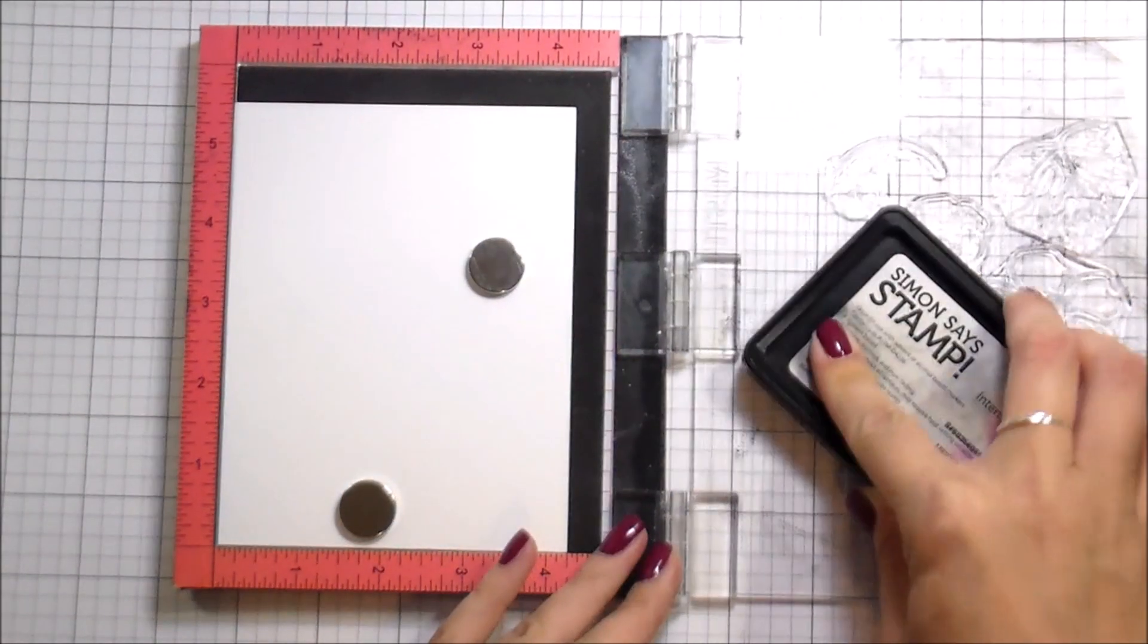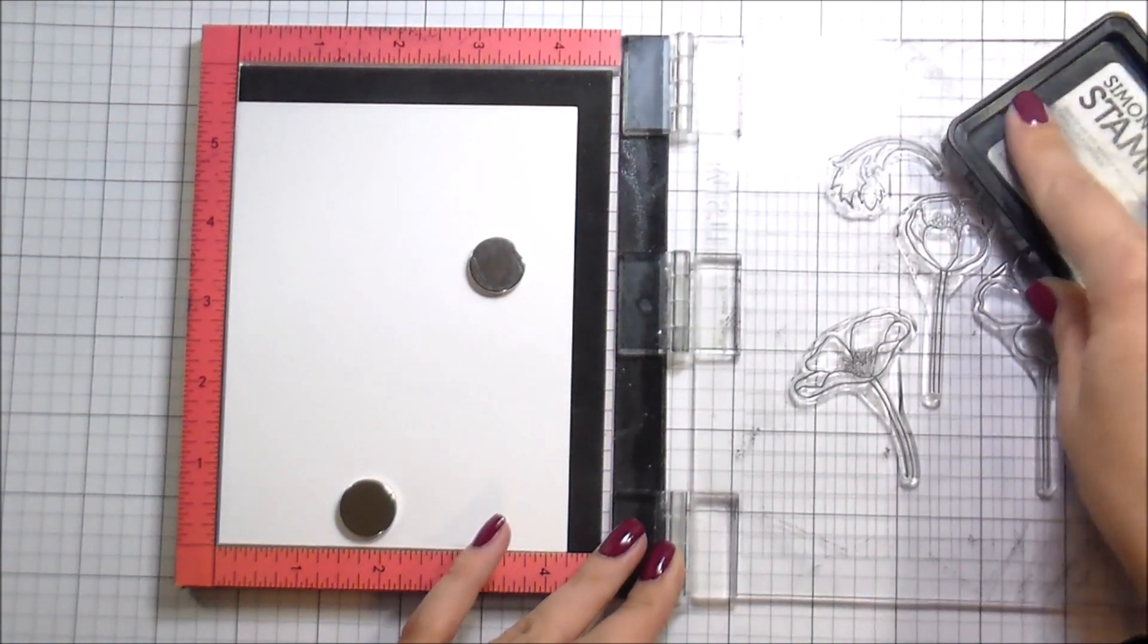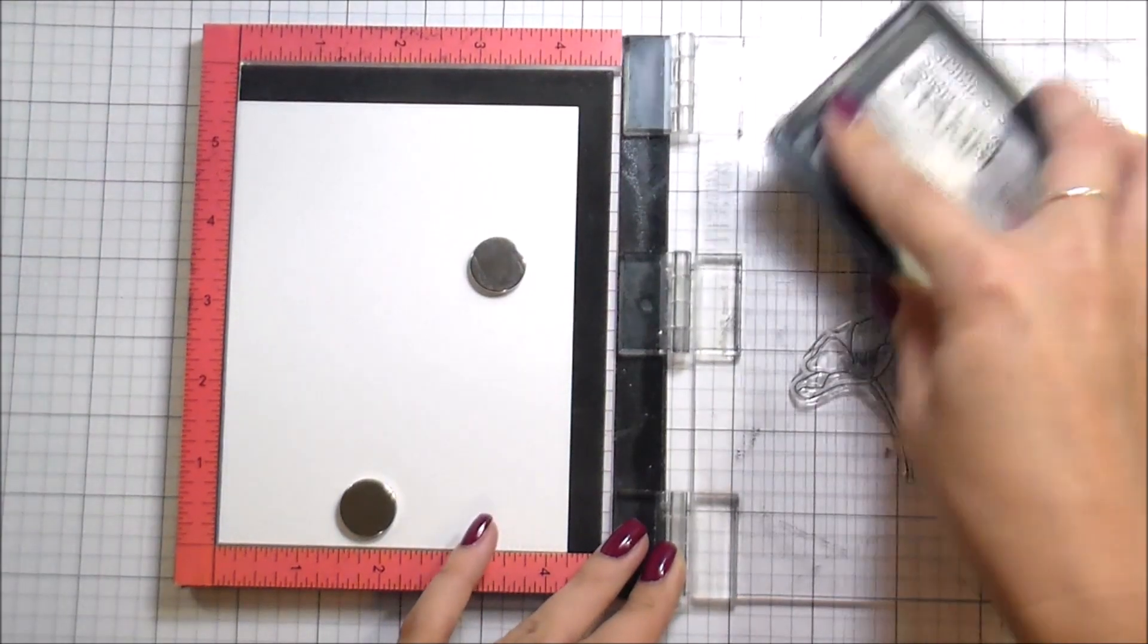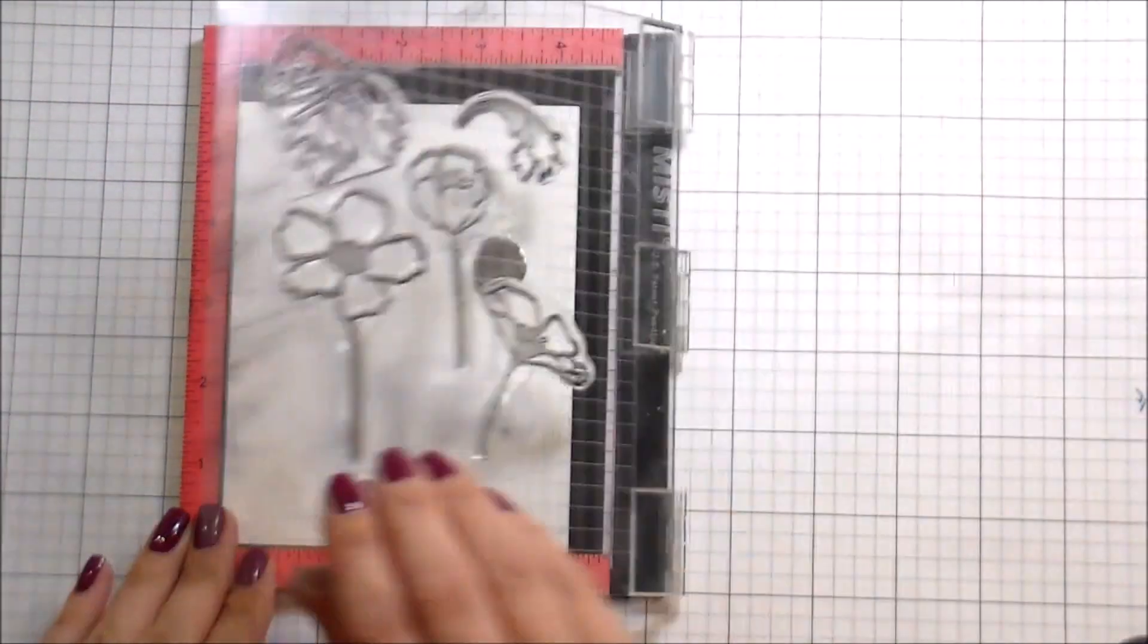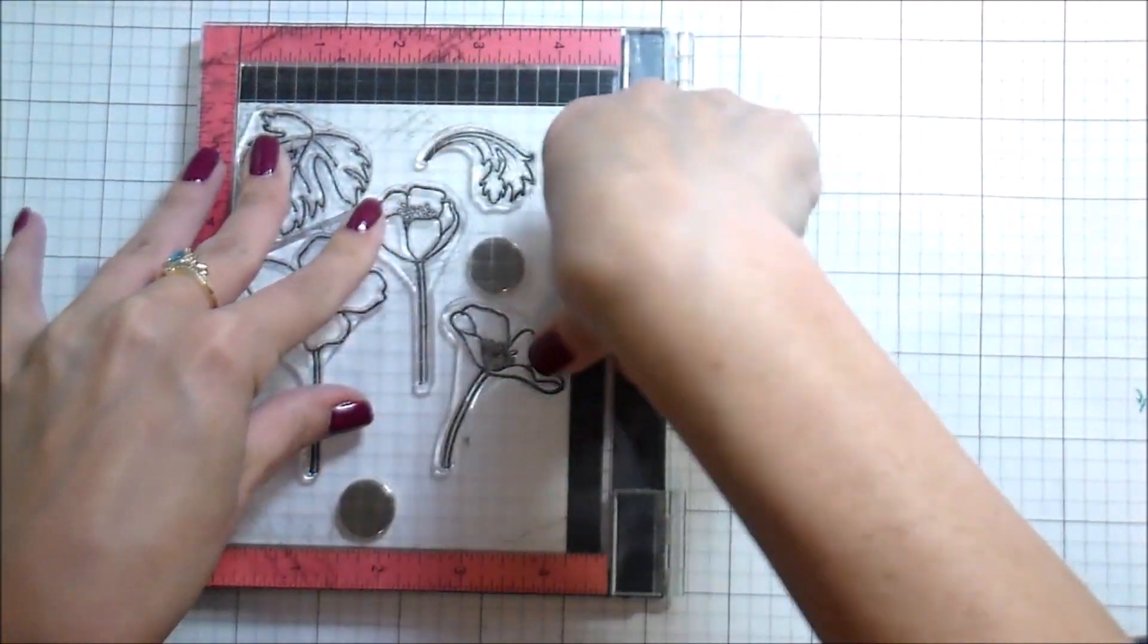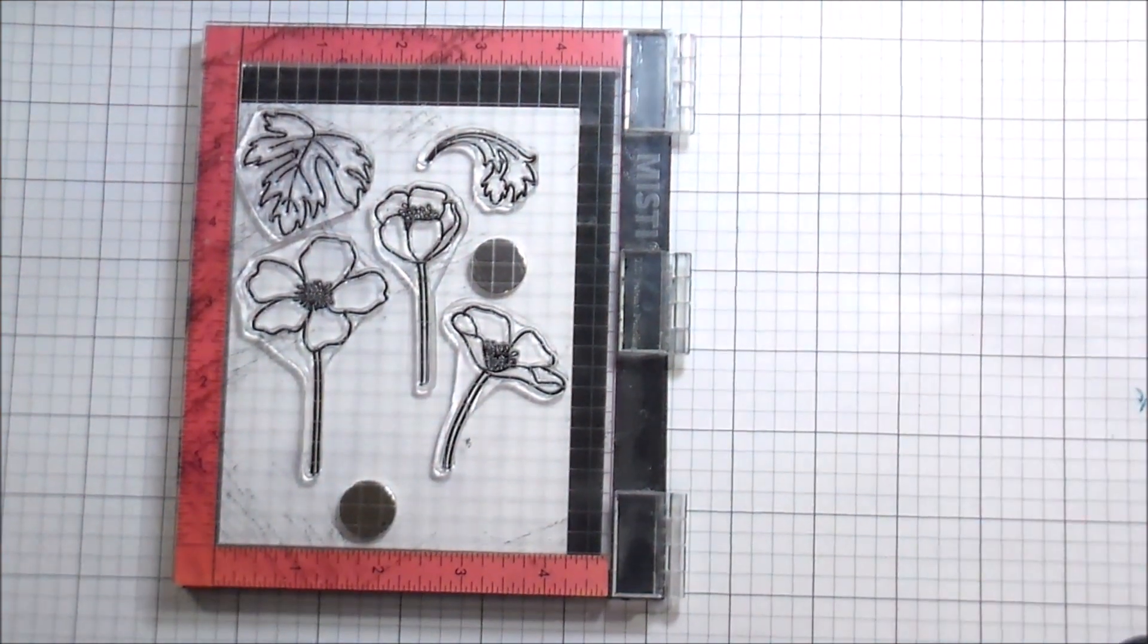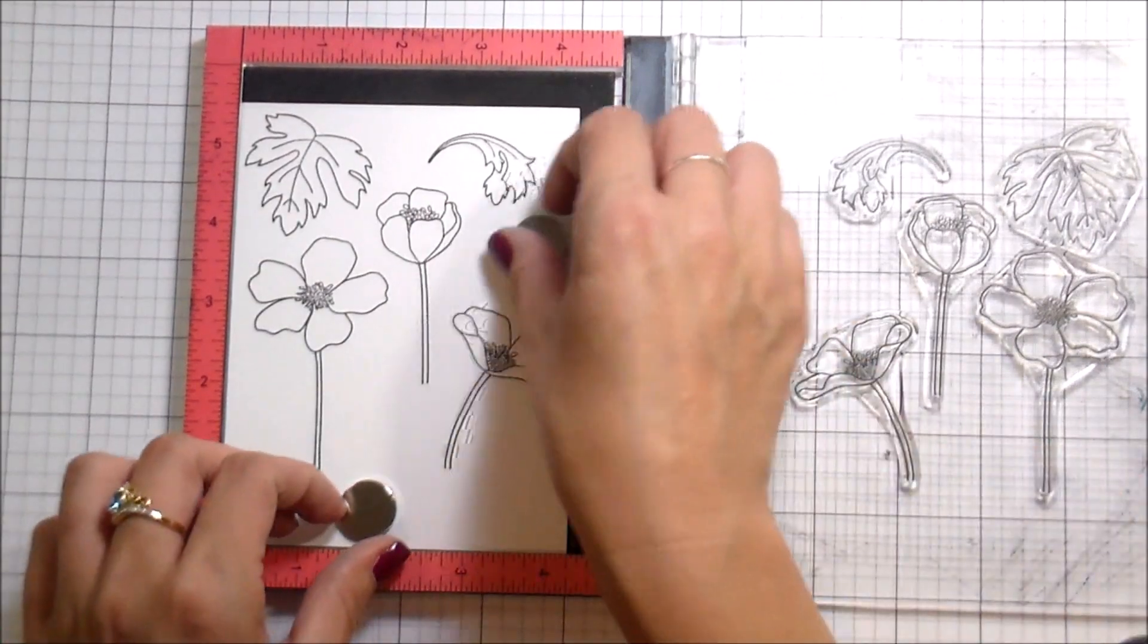I'm stamping in Intense Black ink from Simon Says Stamp because I'm going to be doing some coloring with Copic markers. I love the Misti for this - we're just stamping everything all at one time. Any stamp positioner will do the same thing, I just have a preference for the Misti.